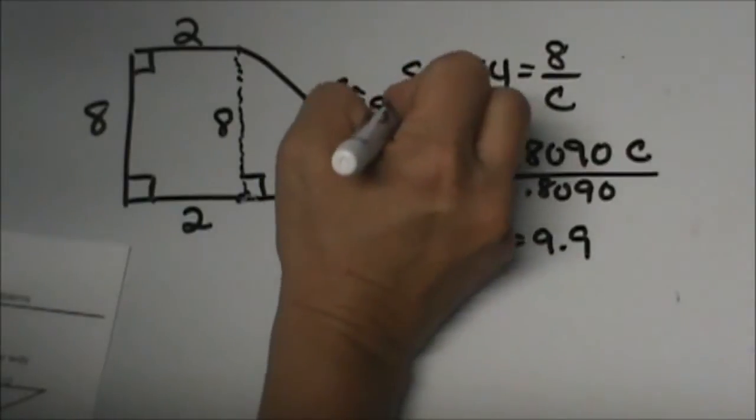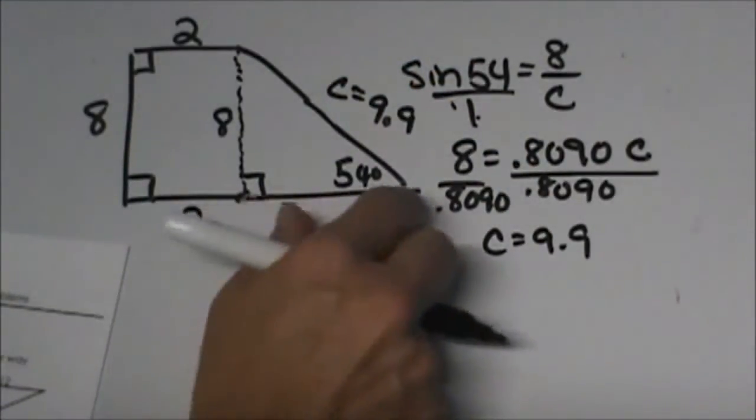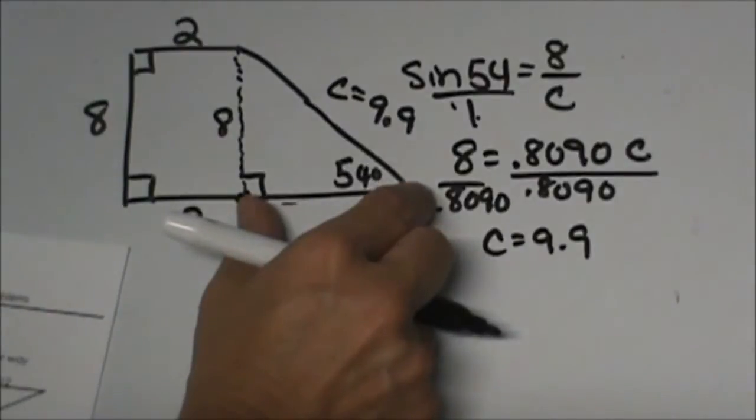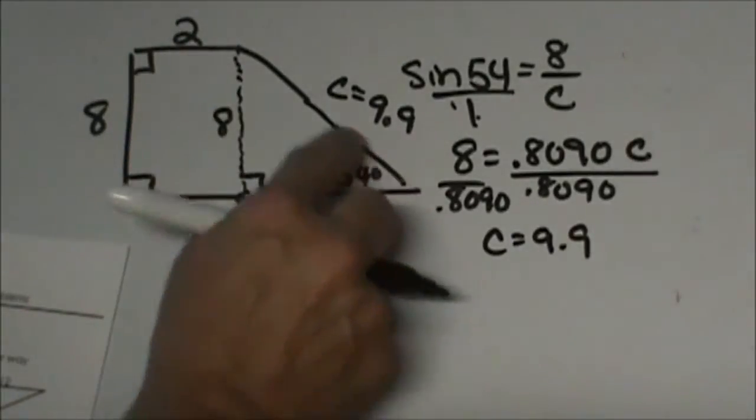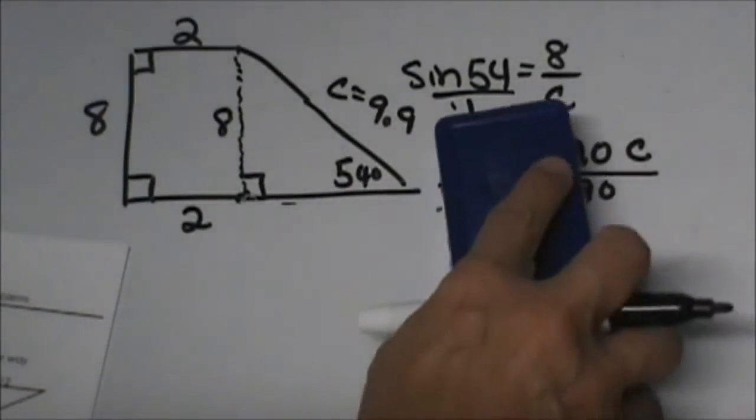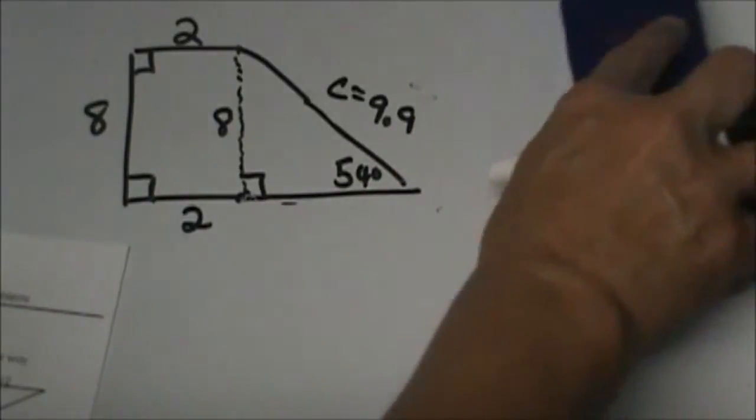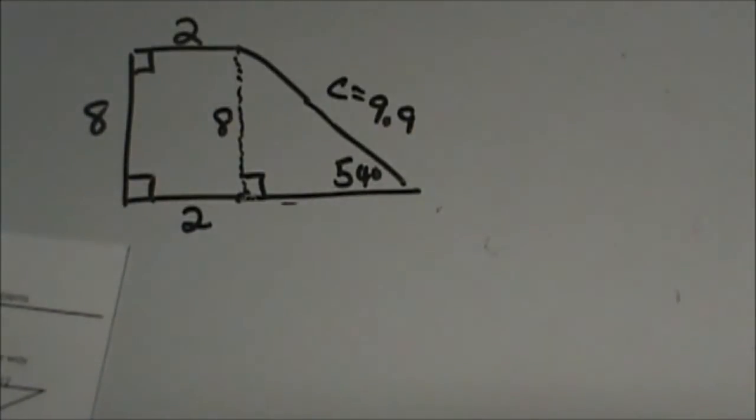Now I'm not done yet, am I? I've still got to find this segment. Now I have a choice. Since I have a right triangle here and I know two sides, I could do what? I could use the Pythagorean Theorem and solve for the missing side.